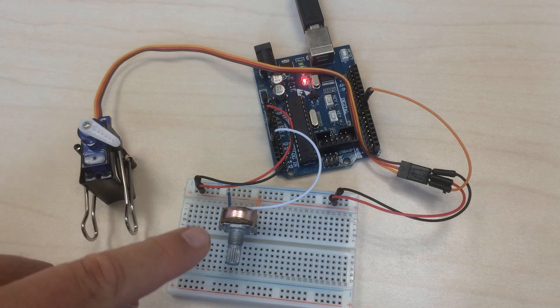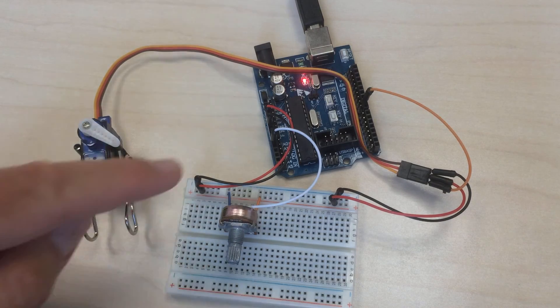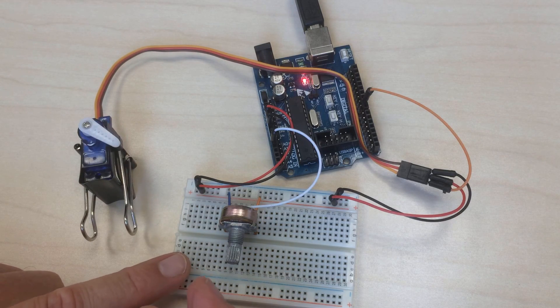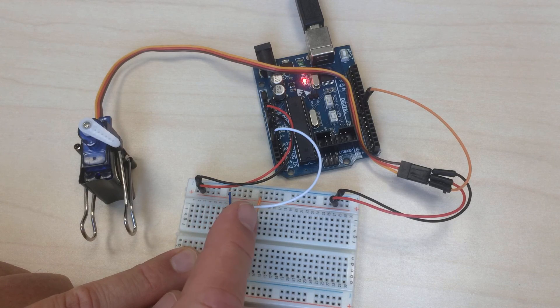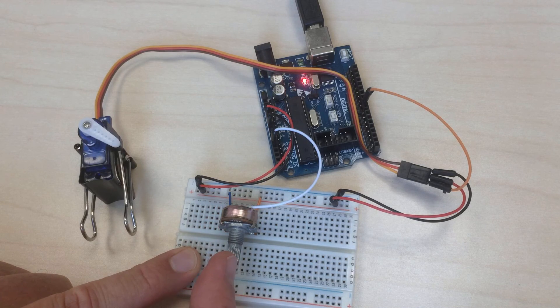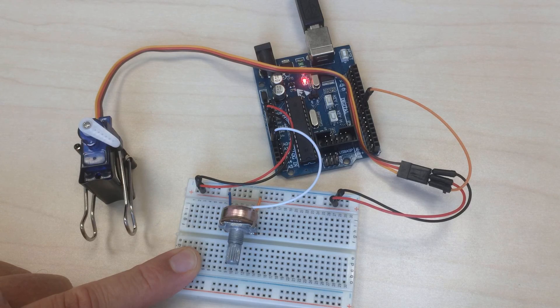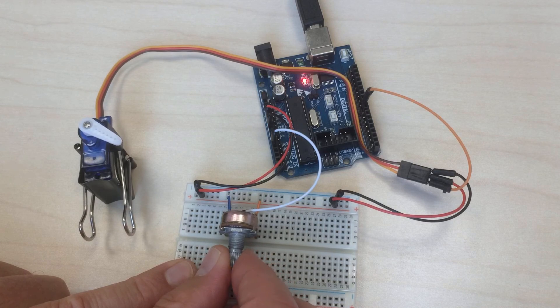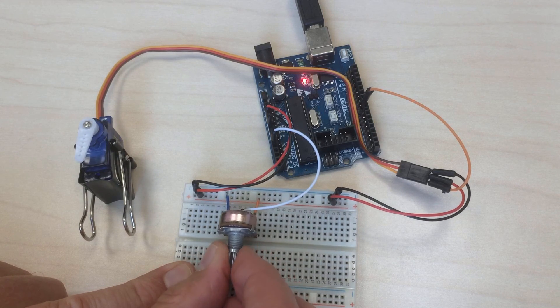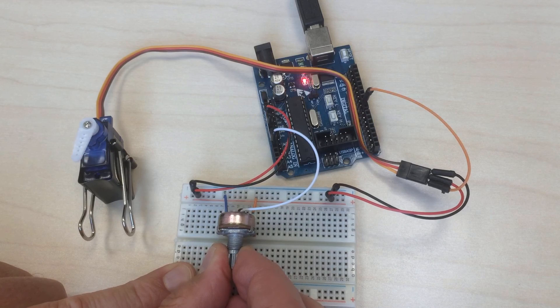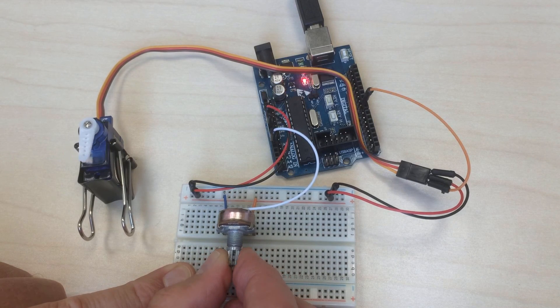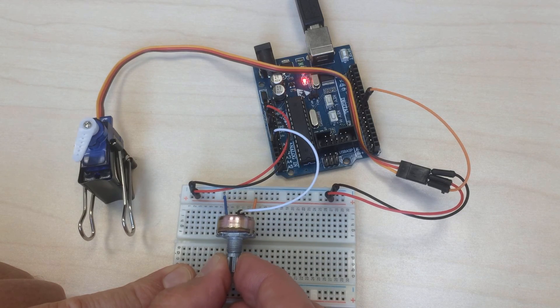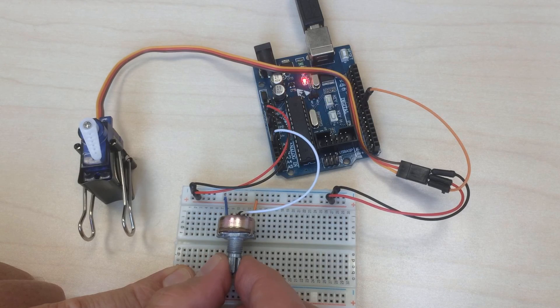And then I also hooked up this potentiometer to the Arduino to one of its analog pins. And the Arduino now, the microcontroller, reads out the position of this potentiometer and then translates it into a position on the servo. So we have something of a haptic interface. So let's see what happens when I turn this potentiometer. And so you see here that the servo follows the motion that I put on the potentiometer.